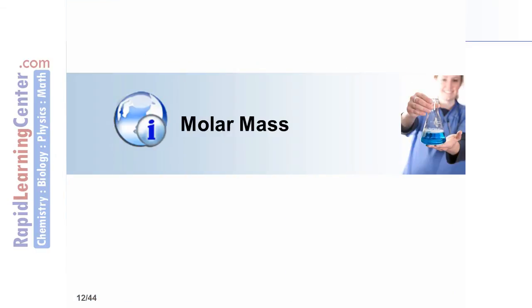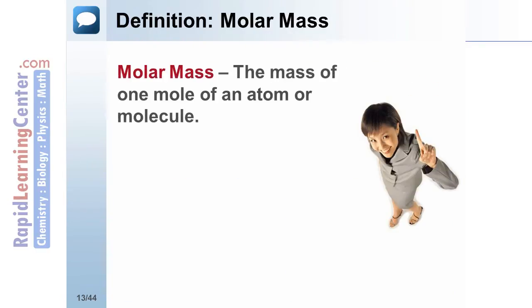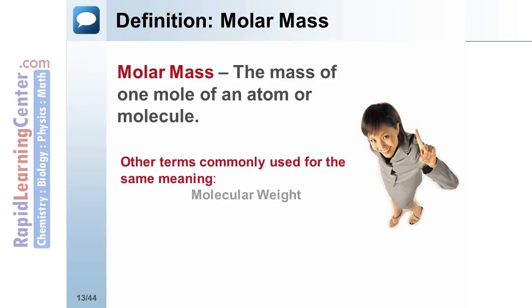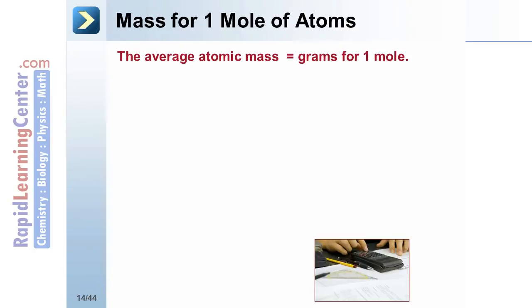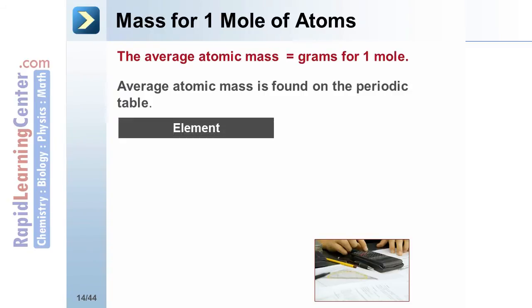What is molar mass? The molar mass is the mass of one mole of an atom or molecule. There are several terms that refer to this idea: molecular weight, molecular mass, formula weight, and formula mass. The average atomic mass, found on the periodic table, is the mass in grams for one mole of that atom. Since it's the mass for one mole, the unit is grams per mole.